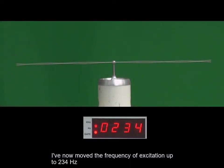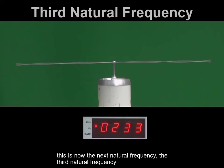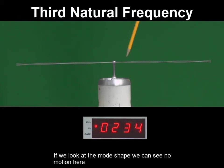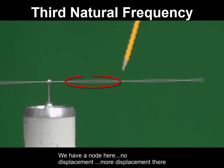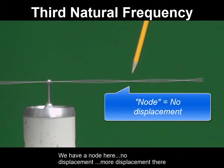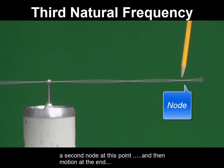I've now moved the frequency of excitation up to 234 Hz. This is now the next natural frequency, the third natural frequency. If we look at the mode shape, we can see no motion here. At this point here, we've got large motion. We have a node here, no displacement, more displacement there, a second node at this point, and then motion at the end.